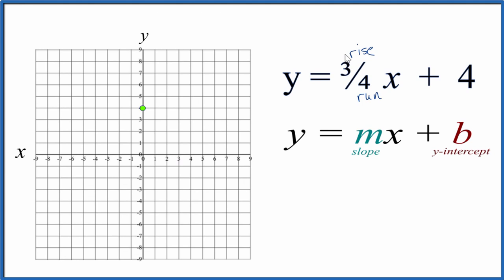So we rise one, two, three, and we go over run one, two, three, four. We do that from the y-intercept. We rise one, two, three, we go over one, two, three, four. So that's our first point.